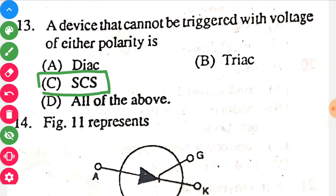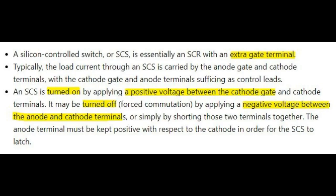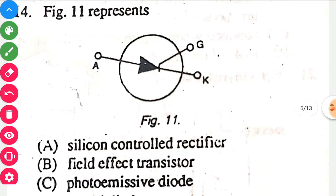A device that cannot be triggered with voltage of either polarity is SCS, because a positive voltage between the cathode gate and cathode terminal must be applied — you cannot apply voltage of either polarity. So option C is correct.